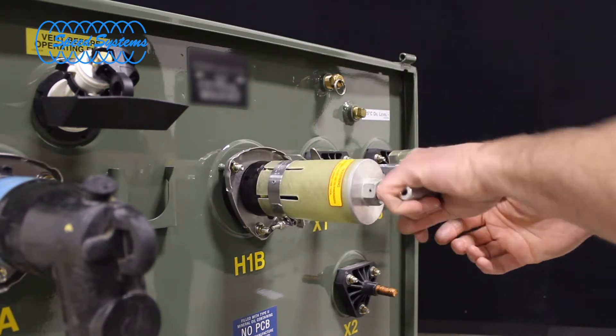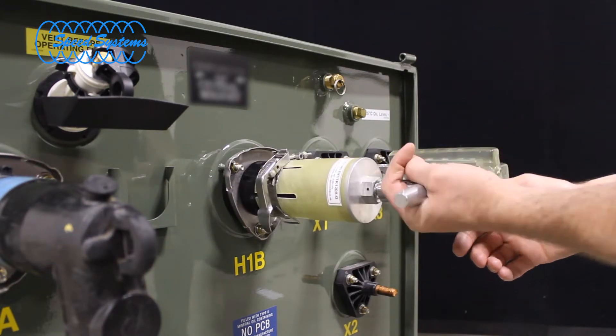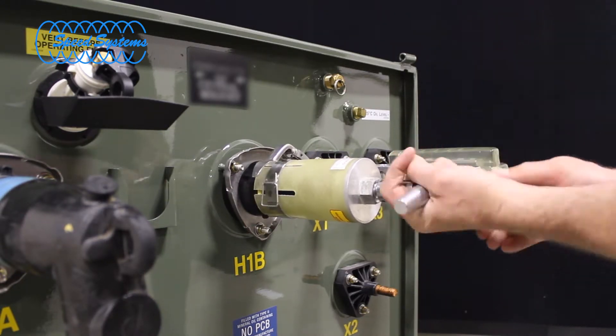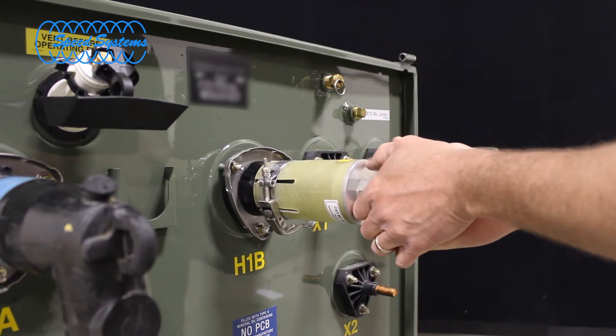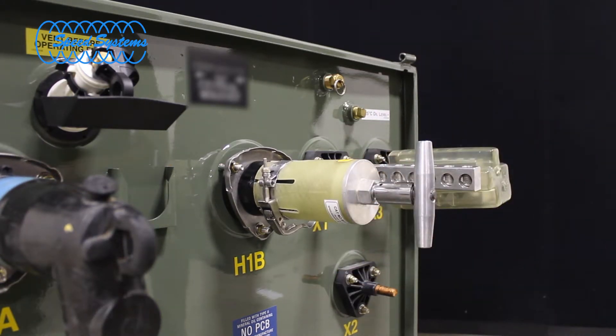Rotate the tool clockwise until the torque limiter pops. The torque limiter may pop several times during the final stages of tightening. Keep rotating the tool until the torque limiter has popped several times without further rotation of the insert.